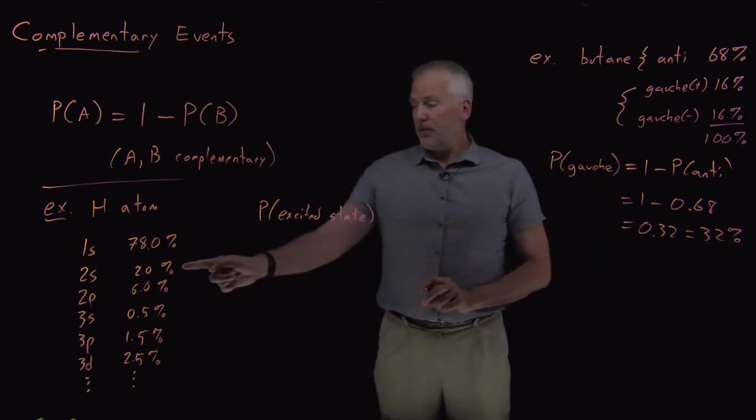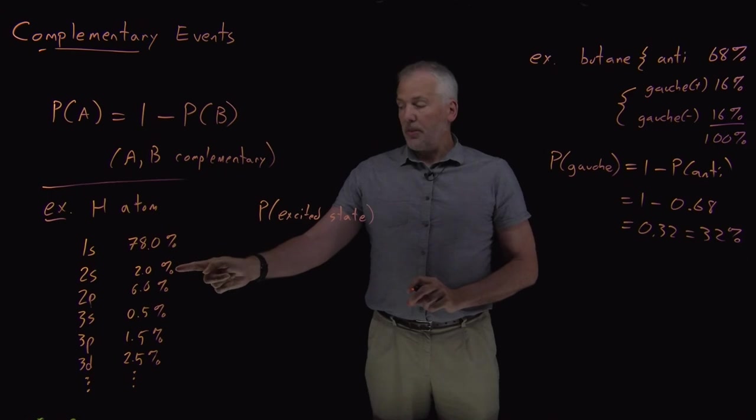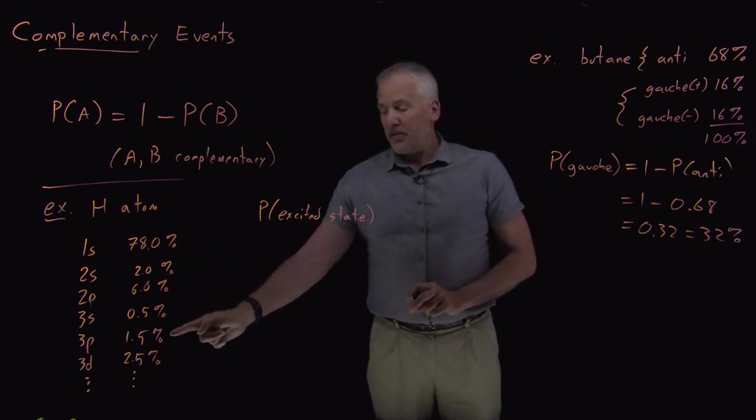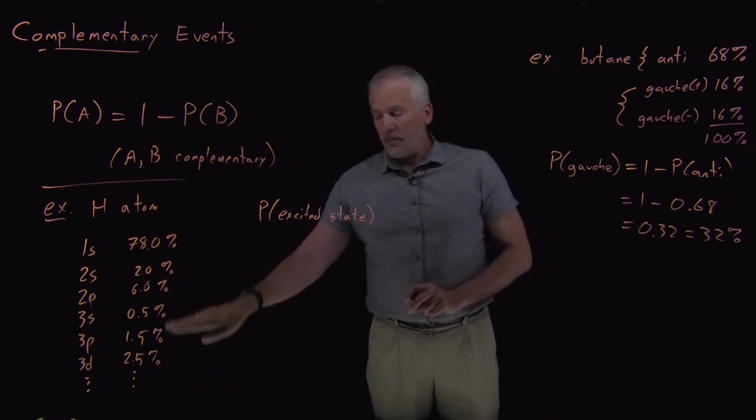So if I think about that as a mutually exclusive problem, then what I've asked to do is what's the sum of the probability that's in the 2s or 2p or 3s, 3p, 3d, and so on. So I'd have to add up all these numbers.